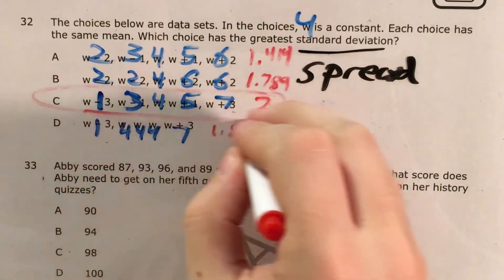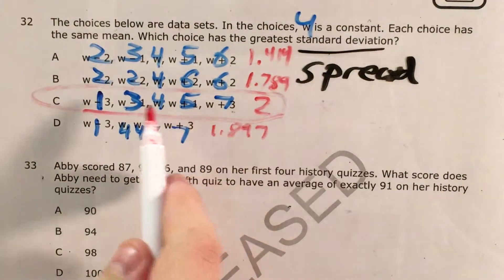It's probably clear at this point that C has the greatest standard deviation, and that's one way we can tell that the data, that the numbers in this set are most spread out.